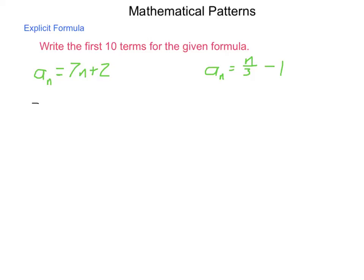So, if I want a sub 1, that is equal to 7 times 1 plus 2, which is simply 9. a sub 2 is going to be 7 times 2 plus 2, which is 16. a sub 3 is 7 times 3 plus 2, which is 23.